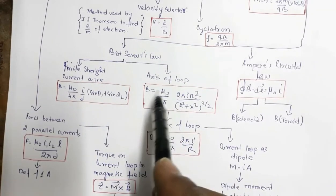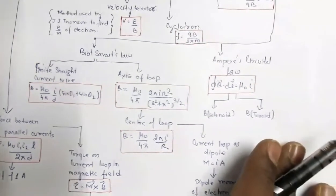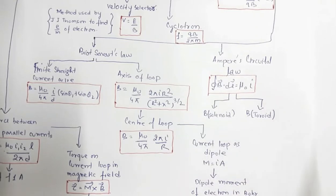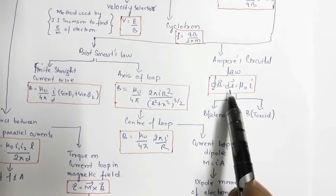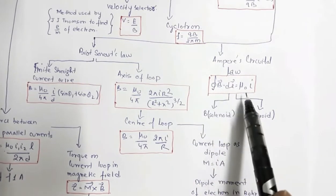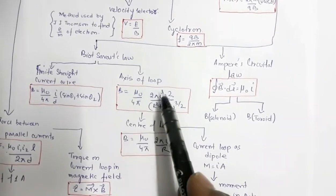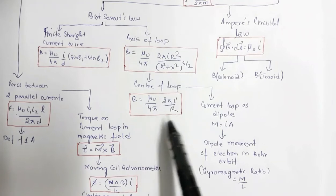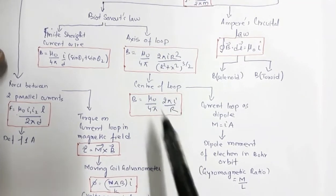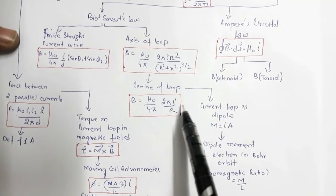Using Biot-Savart law, the magnetic field along the axis of a loop is B = (μ₀/4π) × (2πir²) / (r² + x²)^(3/2), where r is the radius and x is the axial distance. At the center of the loop (x = 0), this reduces to B = μ₀i/2r, or multiplied by n for n turns. Ampere's circuital law — equivalent to Gauss's law in electrostatics — states ∮B·dl = μ₀i, and can be used to find the magnetic field due to a solenoid and a toroid.